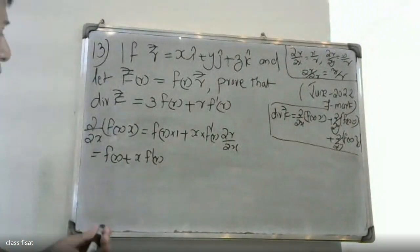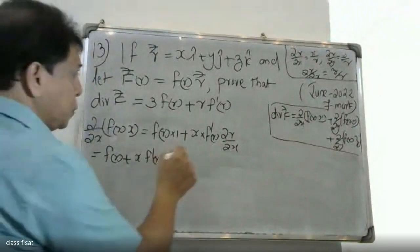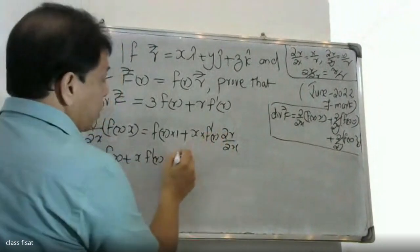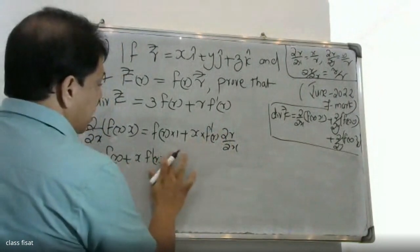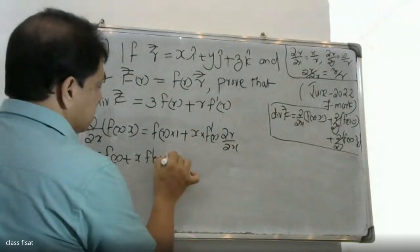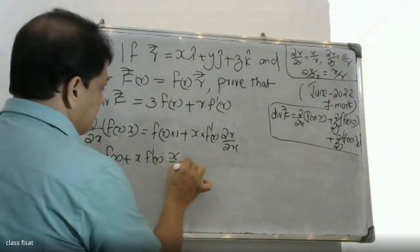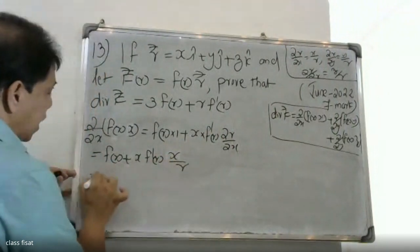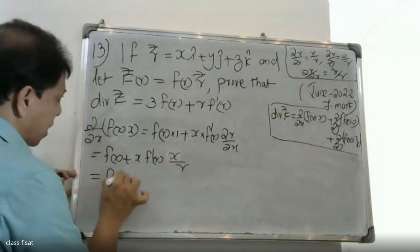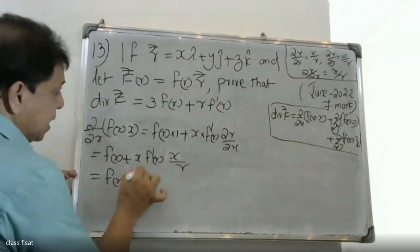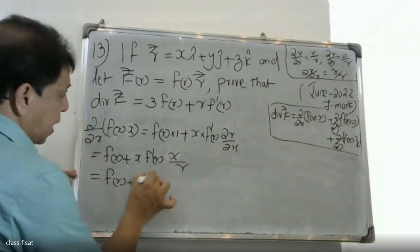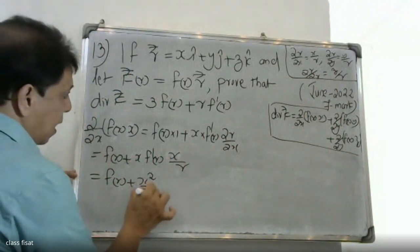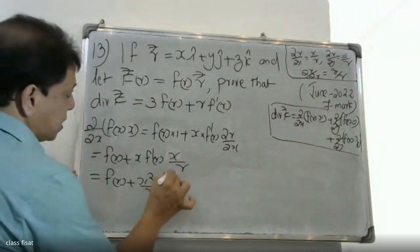Substituting, ∂/∂x of f(r)·x gives f(r) plus x times f'(r) times x/r, which equals f(r) plus x squared over r times f'(r).